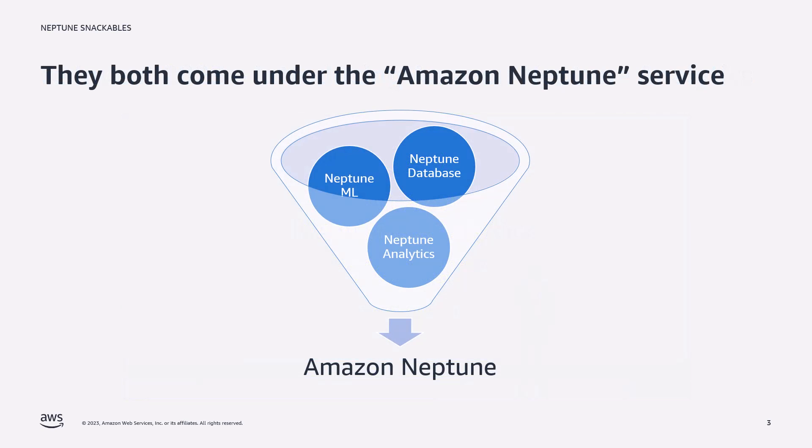Originally the Amazon Neptune term primarily focused on Neptune database, so they were kind of synonymous with each other. However, with the introduction of Neptune ML and now Neptune Analytics, the term Amazon Neptune is now the collective service name for Neptune database, Neptune ML, and Neptune Analytics.